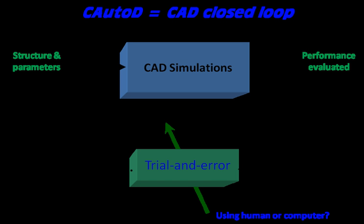There are websites that demonstrate interactive evolutionary algorithms for design. Endlessforms.com allows you to evolve 3D objects online and have them 3D printed. Picbreeder.org allows you to do the same for 2D images.